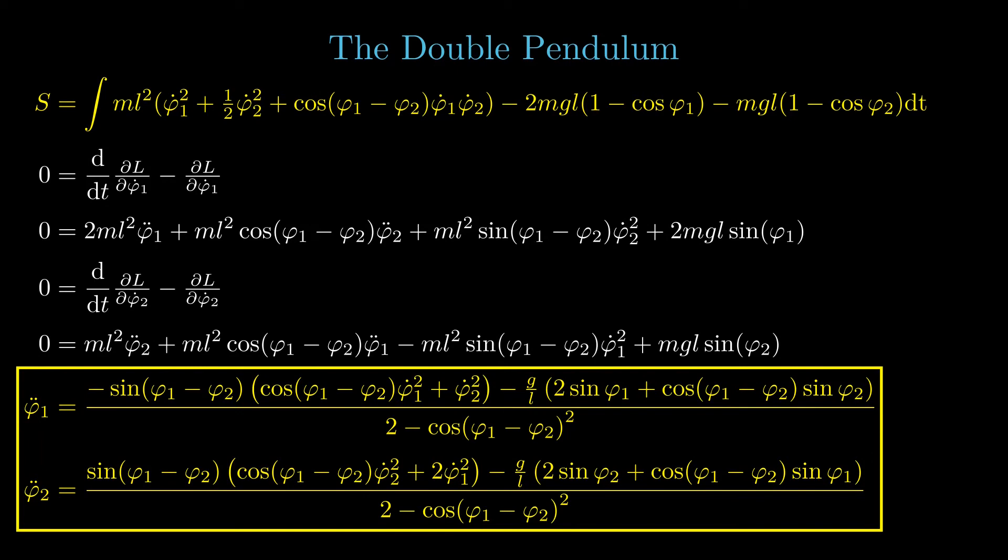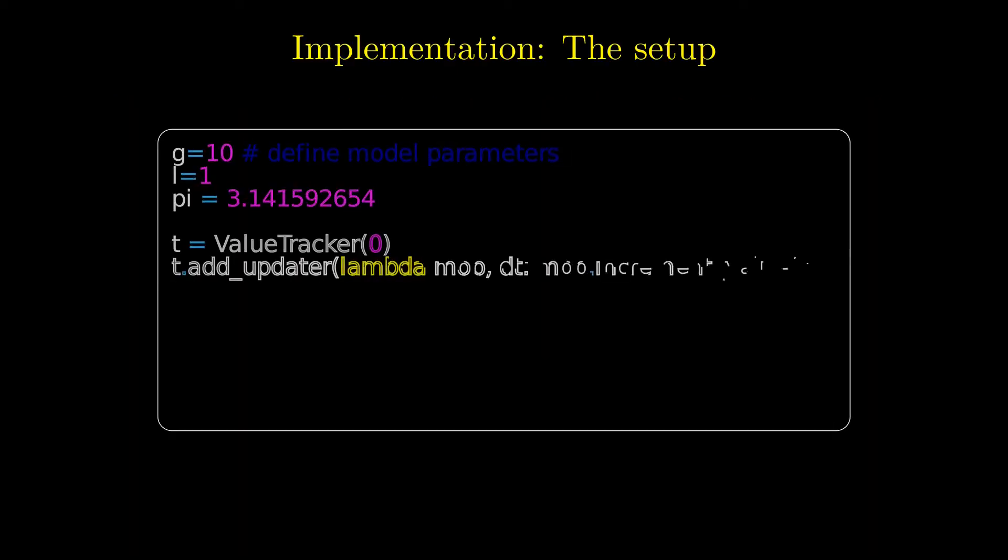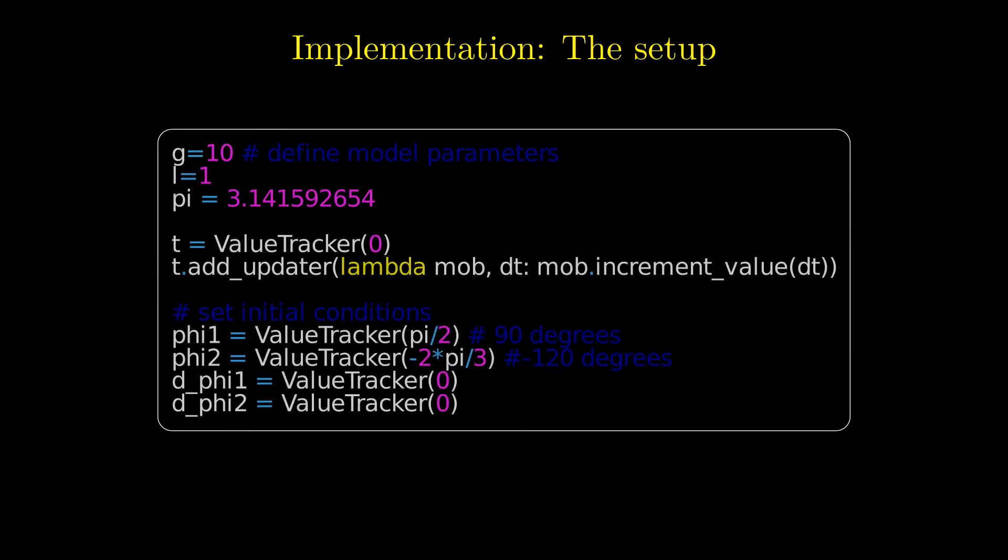Now we are ready to piece all parts together. The Manim software provides all the necessary tools to simulate this model of a double pendulum. In the first step, the parameters of the model and the initial conditions are declared. It is convenient to use value trackers for the time and all dynamical degrees of freedom. With the help of an updater function, the time is increased by a step size delta t, which is determined by the frame rate of the animation.